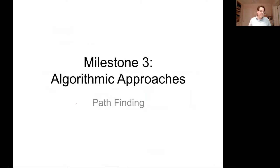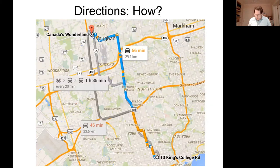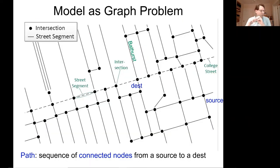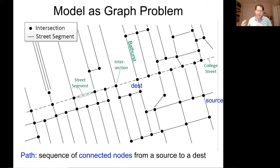Now let's move on to the algorithm. We want to find a path from some start point to an end point. We model this as a graph — we've been leading you toward this with intersections and street segments, processing OpenStreetMap data to build a graph. We're clearly going to model this as a graph problem. Our nodes are intersections and our edges are street segments.